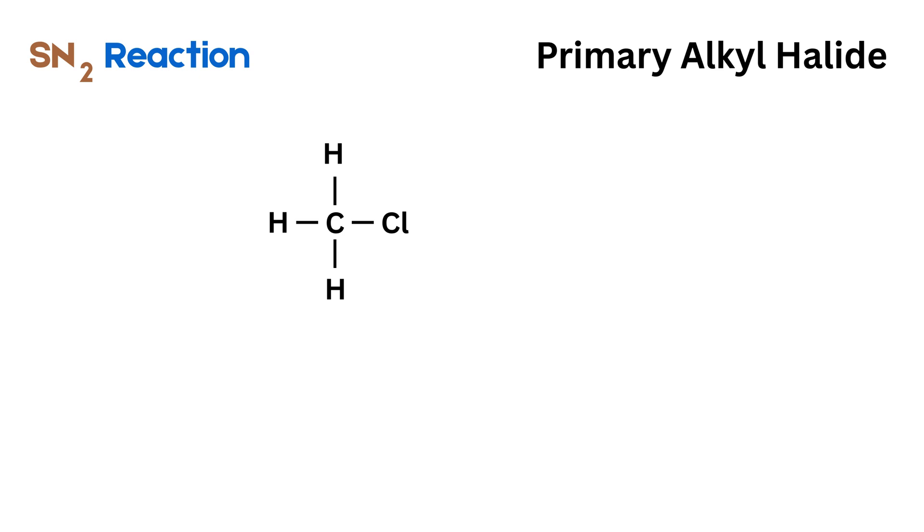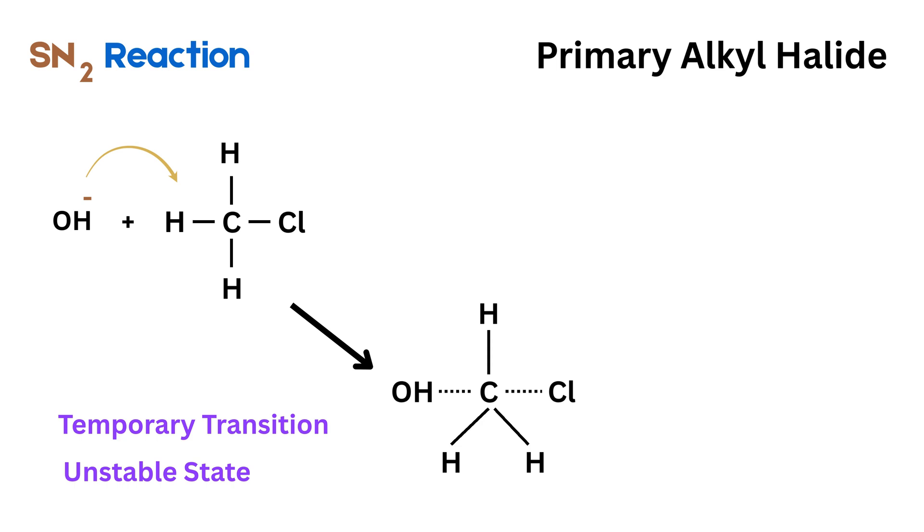The SN2 mechanism occurs in just one single step. Here, the strong nucleophile approaches the carbon from the backside, the side opposite to where the halogen is attached. As the nucleophile starts forming a bond with carbon, the carbon-halogen bond begins to break at the same time. This produces a temporary transition state where the carbon is partially bonded to both the nucleophile and the leaving group. This state is unstable and exists only for a fraction of a second.